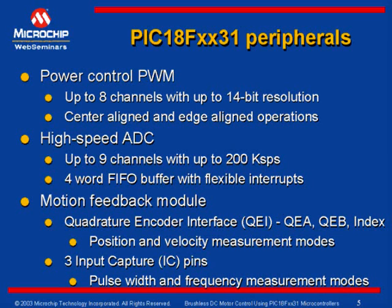The PIC18Fxx31 peripherals support velocity and speed measurements with three input capture pins offering multiple modes for pulse width and frequency measurements. These features include interrupt on change capabilities used for Hall sensor interface, which we will explore when controlling a BLDC motor using Hall sensors.